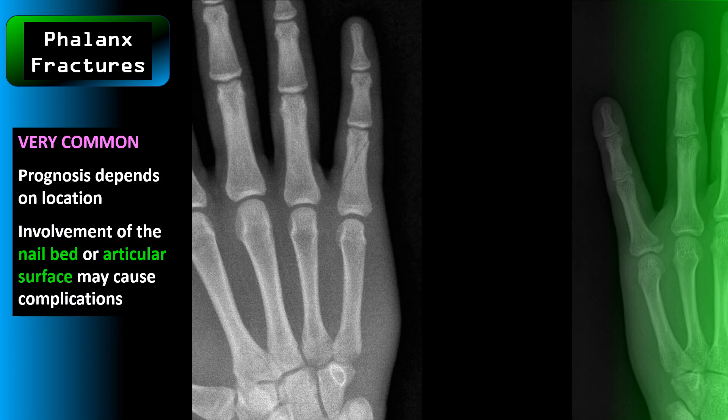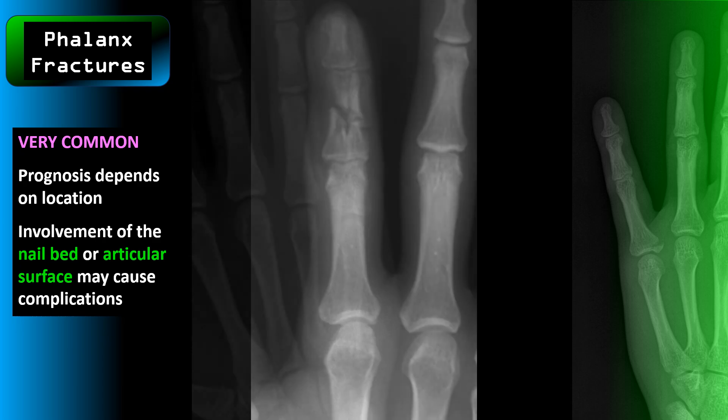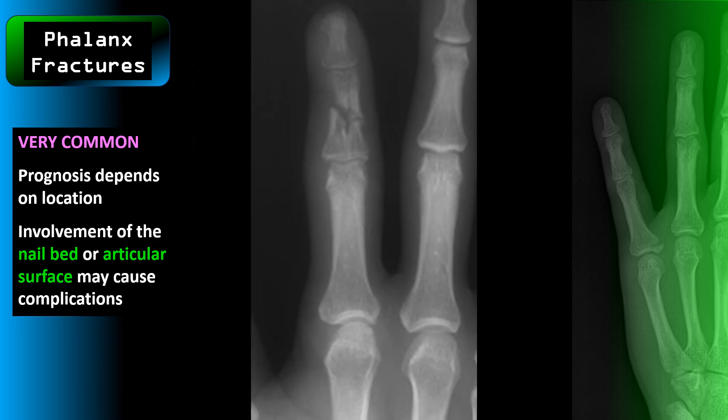A bar room fracture is a transverse fracture of the neck of the fourth or fifth metacarpals, usually due to an impaction injury from a direct blow like a roundhouse with a clenched fist. Phalanx fractures — fractures of the finger — are very common, and their prognosis depends on their location. Involvement of the nail bed or articular surface may cause complications; for example, bleeding from the nail bed is treated as an open fracture due to the risk of infection.